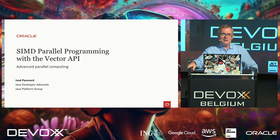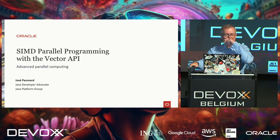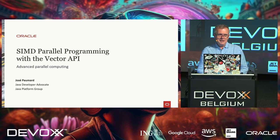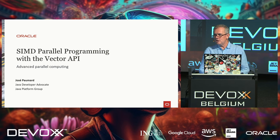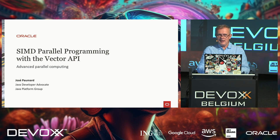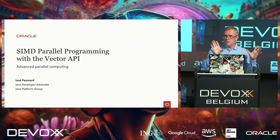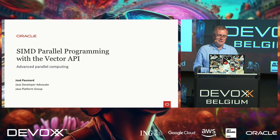Good afternoon, thank you for coming. Welcome to this session. I'm here to talk to you about SIMD parallel programming with the Vector API. I want to start with a word of warning: there's another vector API in the JDK — the java.util vector API — and I'm not going to talk about that. If some of you made that confusion, maybe it's not too late to join another session.